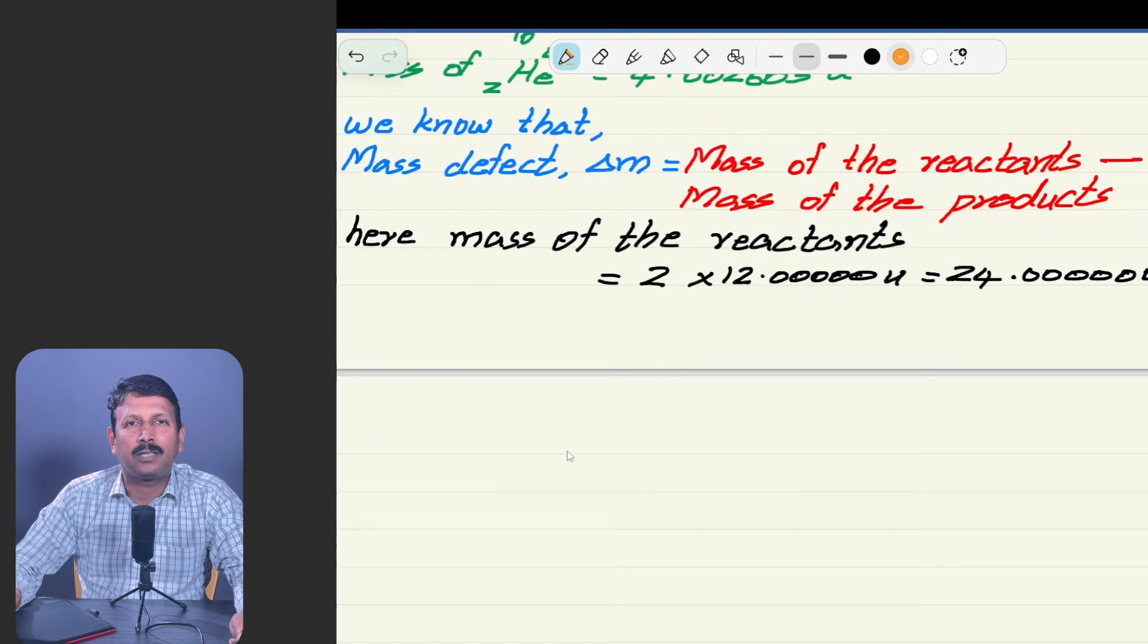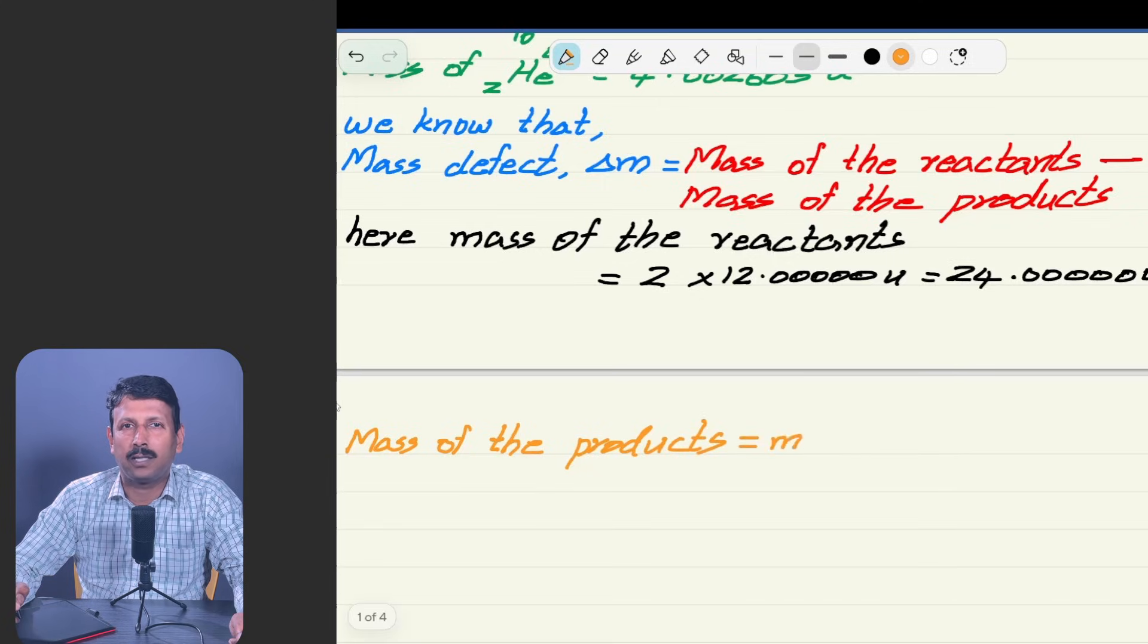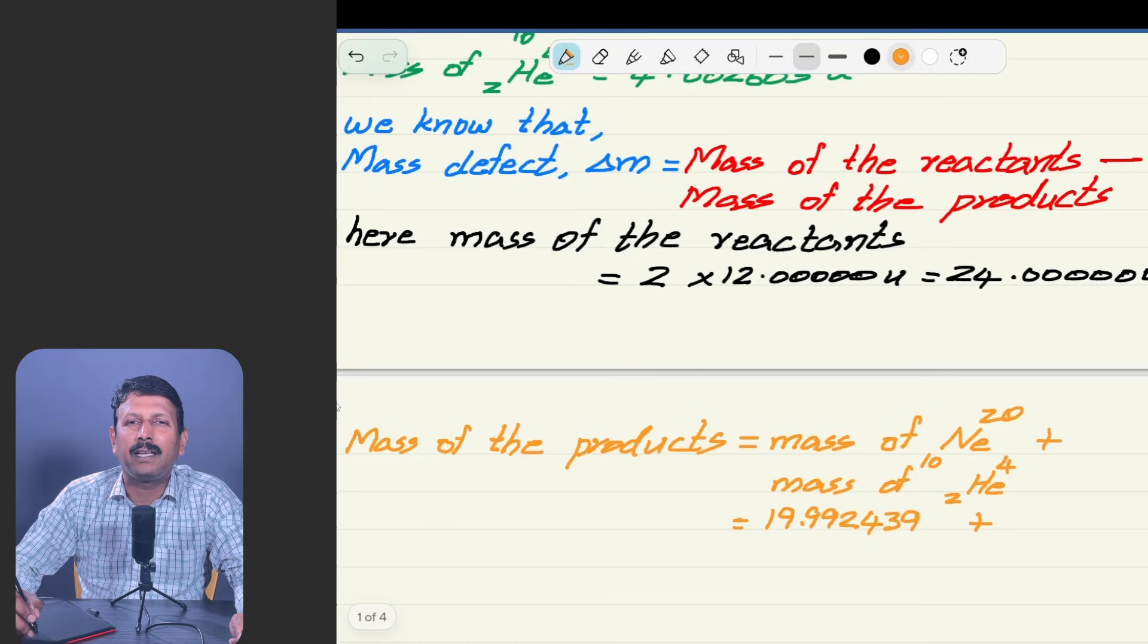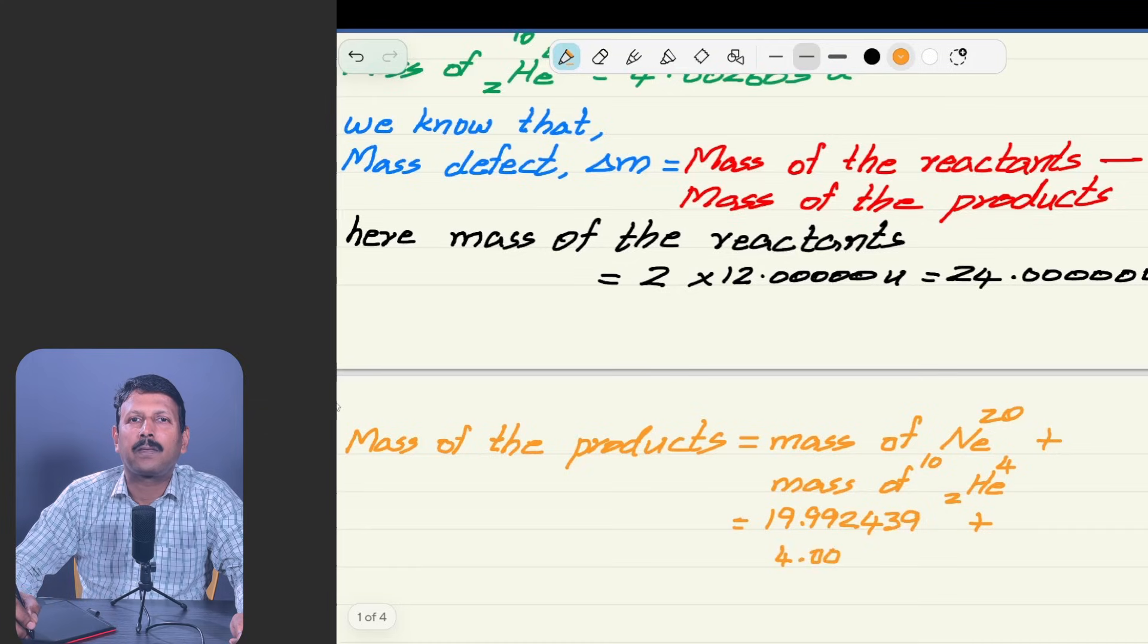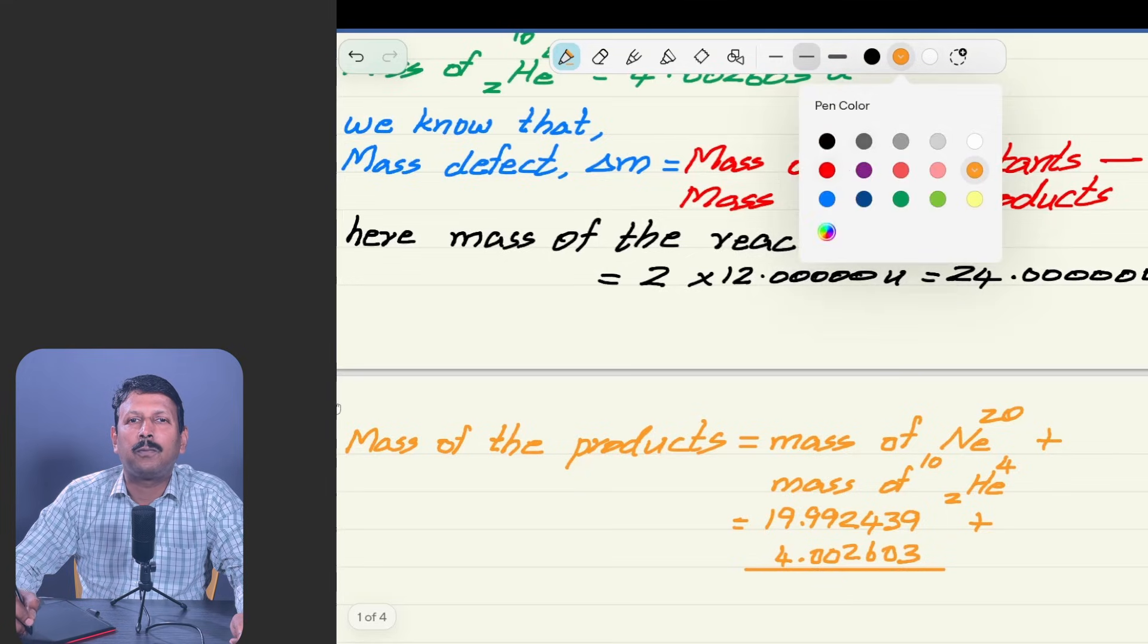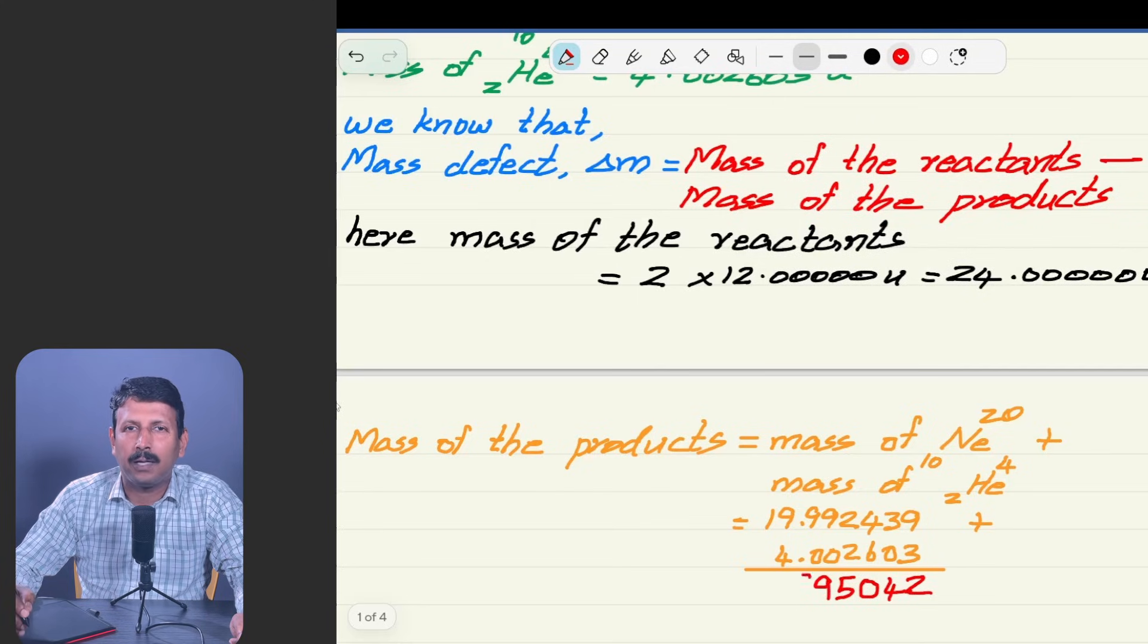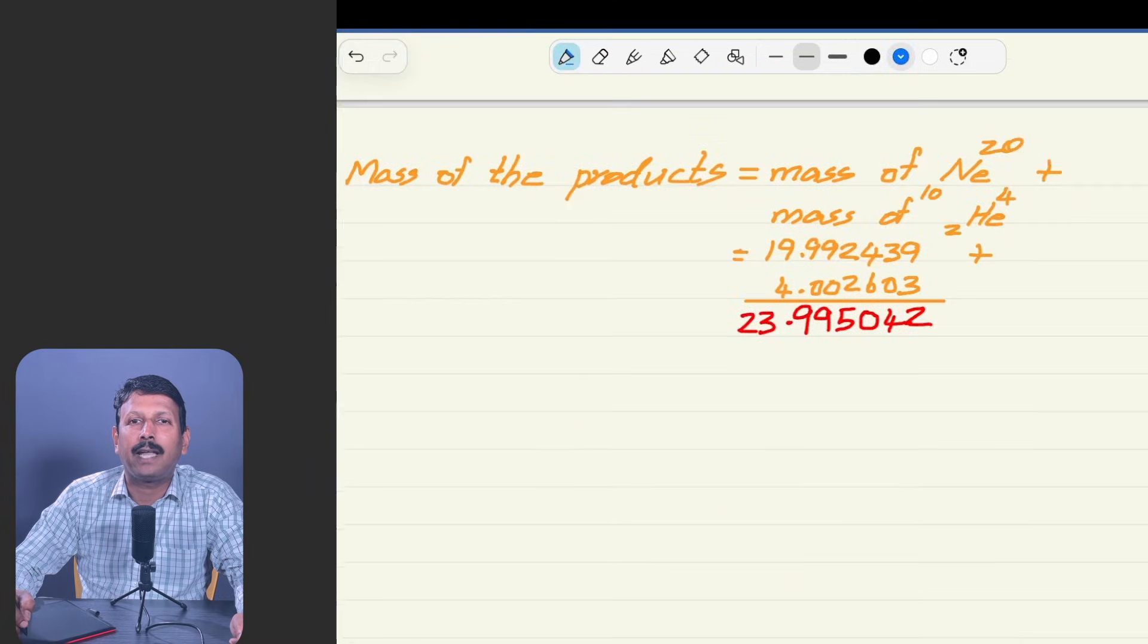Now we will write the other side, that is on the right side part, that is mass of the products. Reactants ready now, total is 24. Now the products side we are going to write that. We have to do the addition of those first. Here mass of Ne₂₀¹⁰ plus mass of He₄² going to write now. First mass of Ne₂₀¹⁰ that is 19.992439 plus we are going to do the addition. And the mass of the second one is 4.002603, then add it. Finally you will get the answer 23.995042.